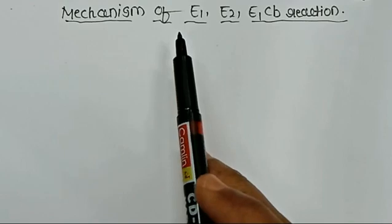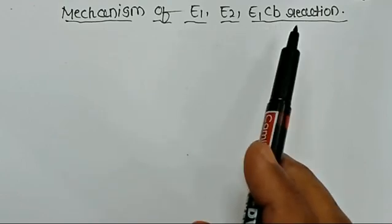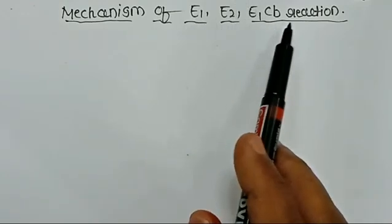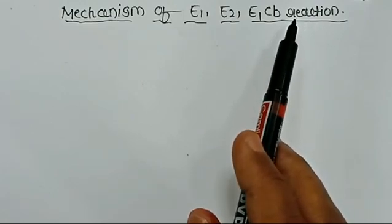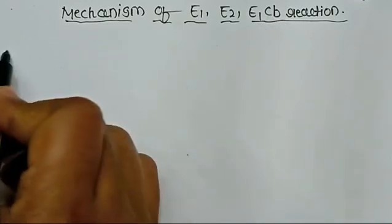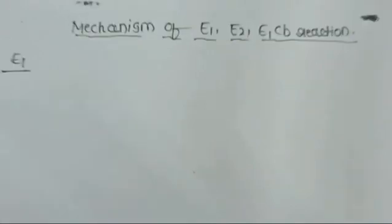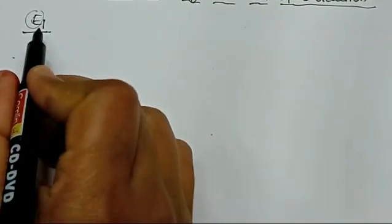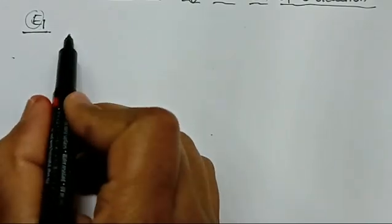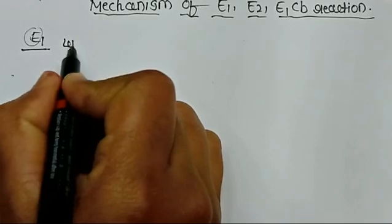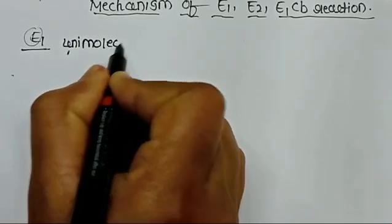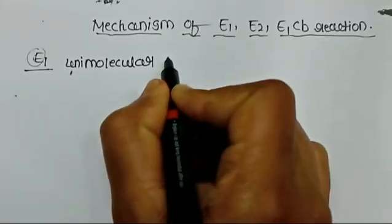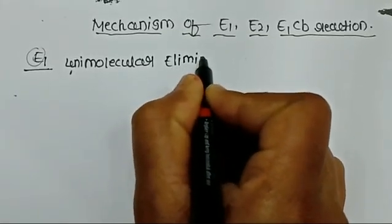Hi dear students, here I am going to discuss about the most important reactions: E1, E2, as well as E1CB reactions. These three reactions are very important, like SN1 as well as SN2 reactions. E1 reaction means E stands for elimination, 1 stands for unimolecular. So commonly we can write: unimolecular elimination reaction.